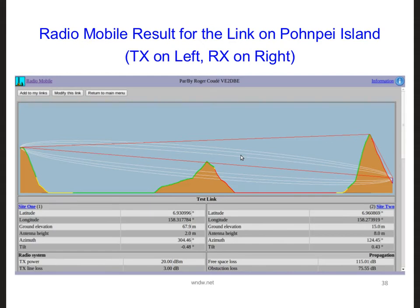Here is the Radiomobile result when the antenna on the left is in transmit mode and the antenna on the right is in receive mode. Radiomobile colors the surface of the ground to indicate the suitability of placing a receiving antenna there. If the receiver is placed on a green surface, a reliable link can be established with the transmitter. Yellow surfaces may not provide reliable connectivity, and red surfaces should be avoided. The direct line of sight and Fresnel zone is also shown. It looks like this link is going to require more work than the last one, but it appears that our approach for setting up a wireless link is appropriate, especially with the help of Radiomobile.